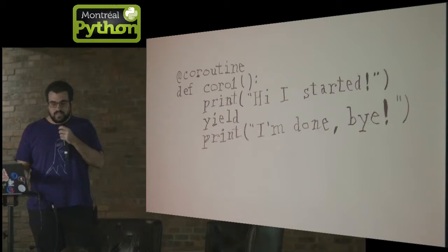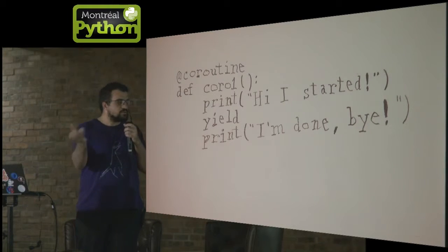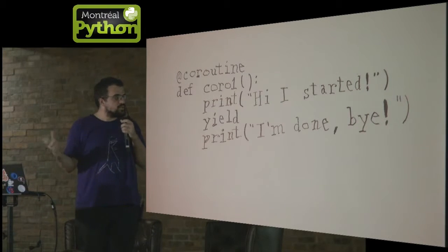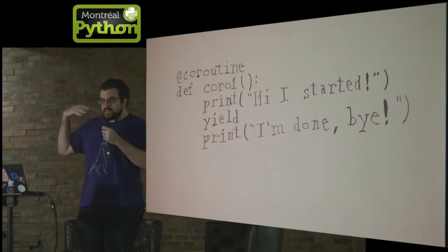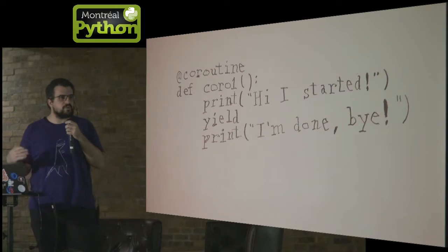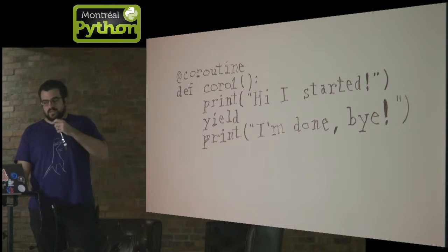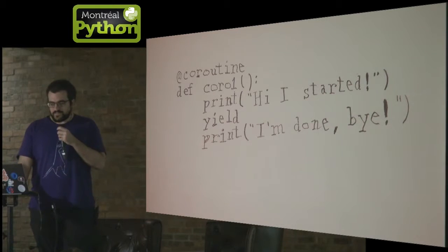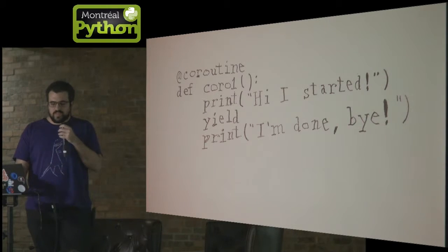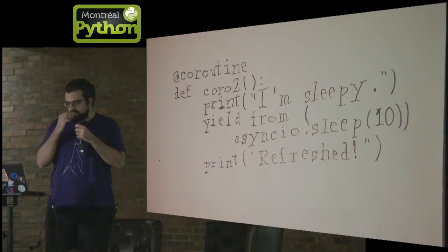So, here's an example. It prints "hi", and then yield — which is the same yield we know from generators — which kind of pops out of the generator for a little bit. Here is the way we think about it mentally: we're yielding control to some other coroutine to run. And then when it's our turn again, we'll print "I'm done. Bye." And that's a very, very simple example.